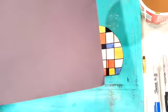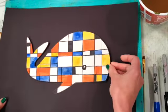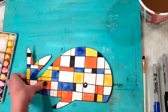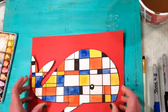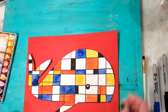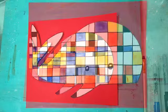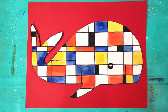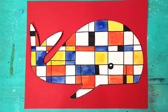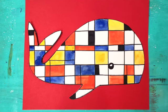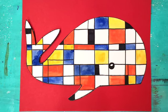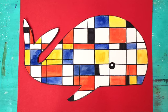Now that I have my whale cut out I decided to put it on a background. I could do a big background like this and maybe even add a fun border but for now I'm just gonna put it on a little background. This is red construction paper and I could glue it like that. And there you have it, my final whale inspired by Mondrian. Hope you enjoyed and thanks for watching.